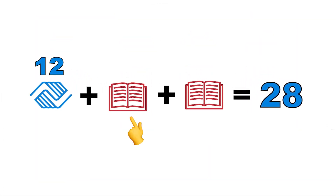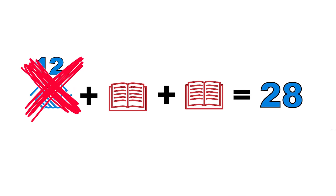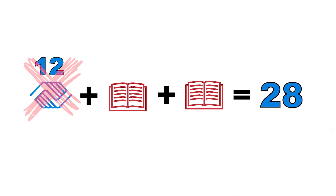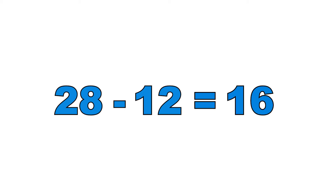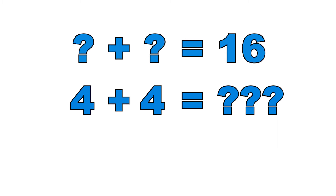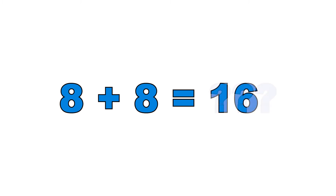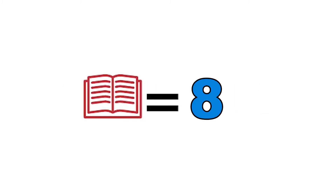Now we know the hands are 12, so the next equation is 12 plus a book plus a book equals 28. First, we get rid of the hands — just like an algebra problem. We subtract 12 from 28: 28 minus 12 equals 16. So what same number plus itself equals 16? 4 plus 4 is 8, 6 plus 6 is 12, 8 plus 8 is 16. So the book equals 8.